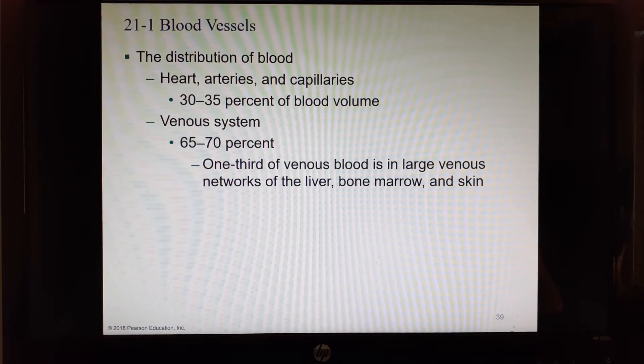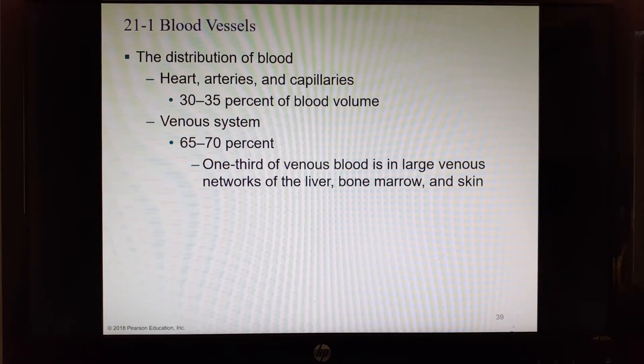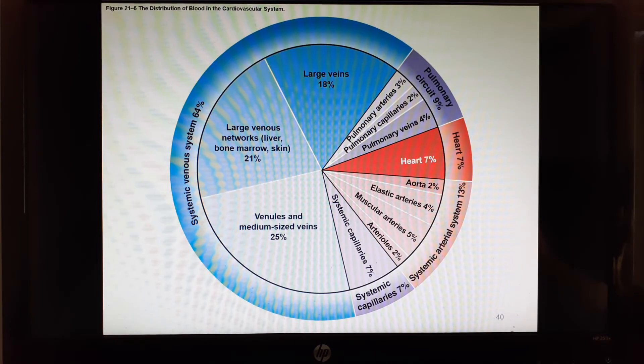So where is most of your blood? Well, 30 to 35 percent of it right now is in your heart, your arteries, and your capillaries. That doesn't seem like very much, does it? That's because 65 to 70 percent of it is in your veins. A third of your venous blood is in your large networks in your liver, bone marrow, and skin. And here's another graphic.